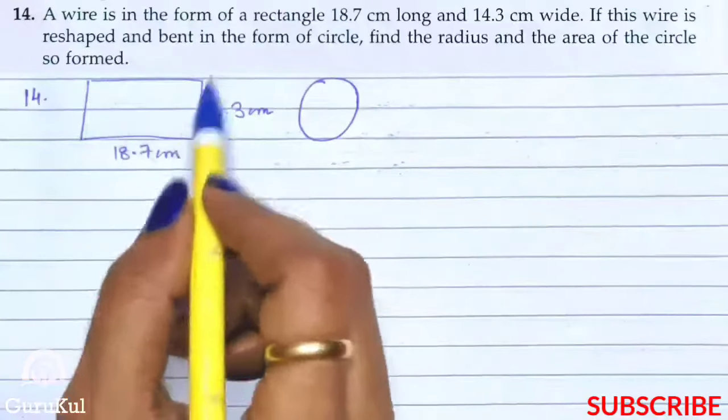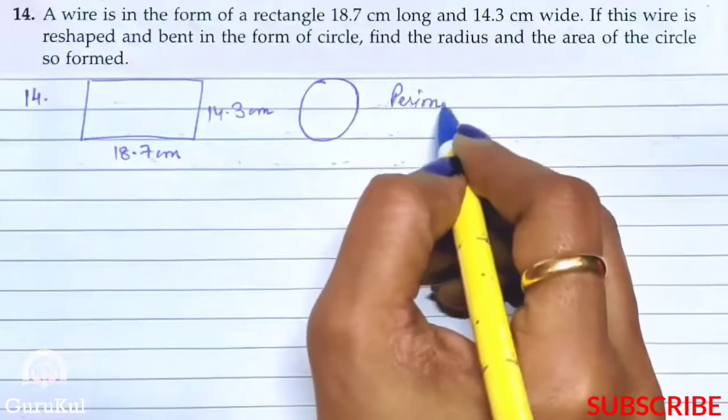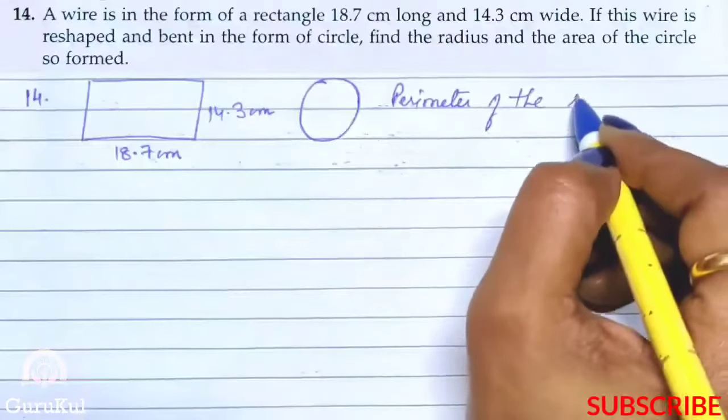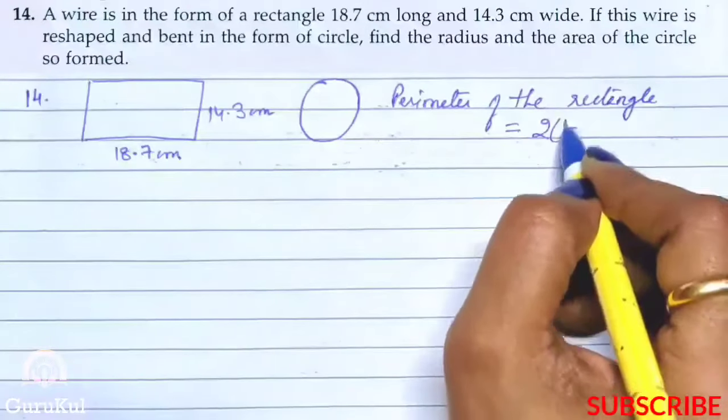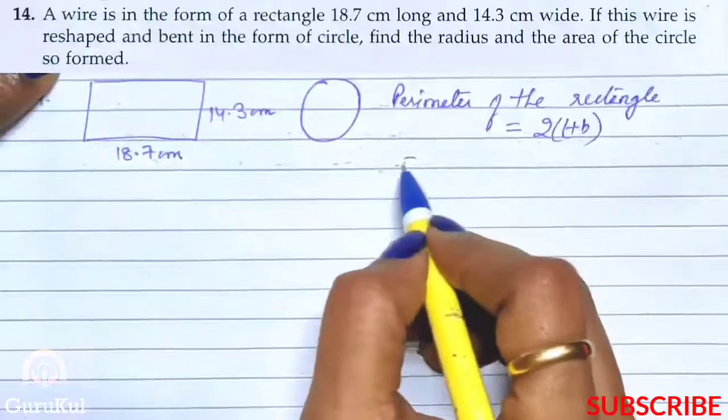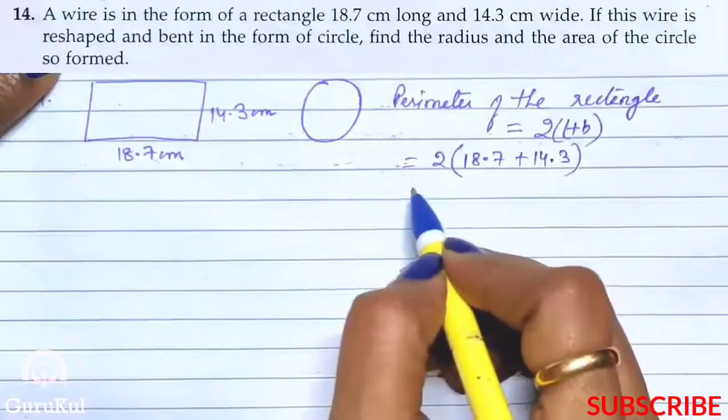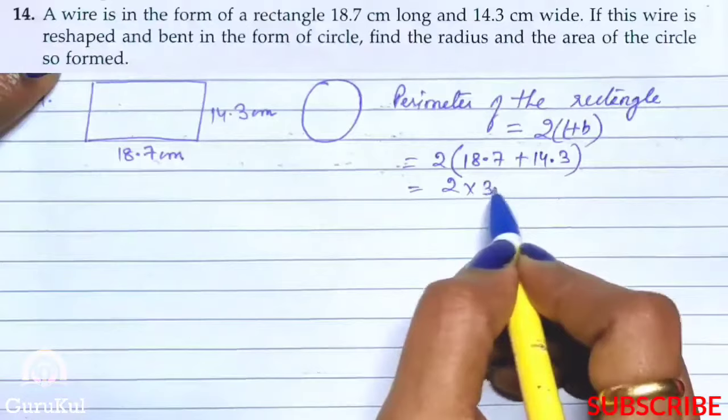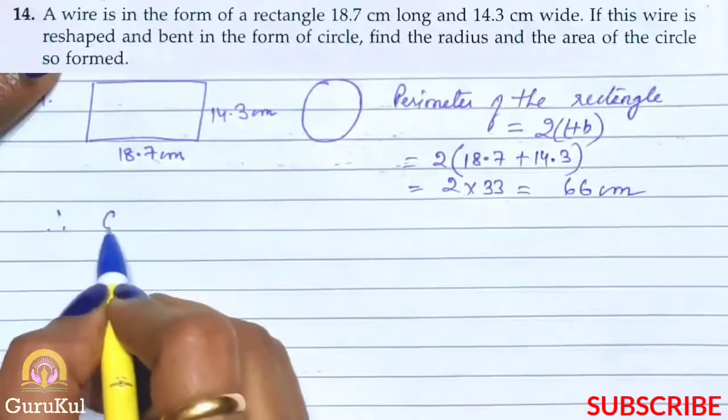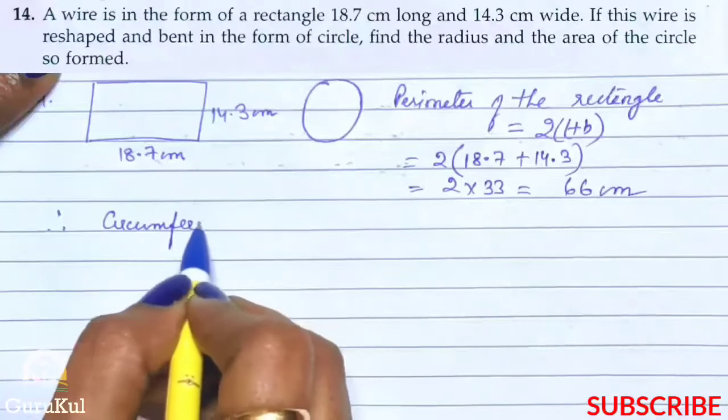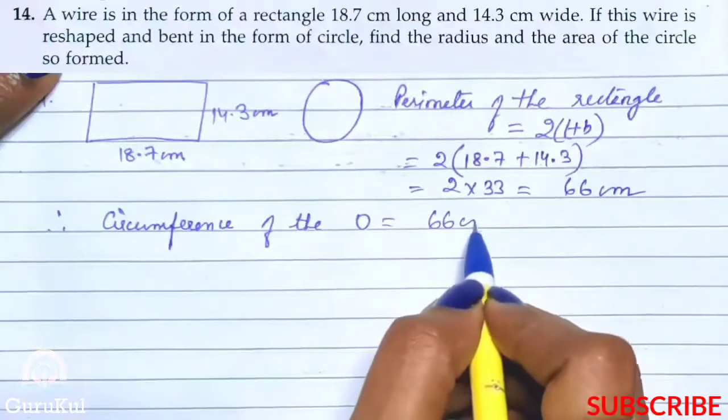So let us first find the perimeter of the given rectangle. So perimeter of the rectangle is equal to 2(length plus breadth), that is 2(18.7 plus 14.3), that is 2 into 33 which is 66 cm.